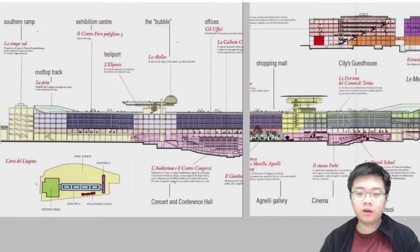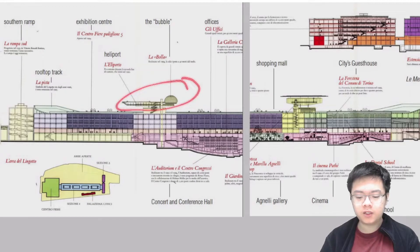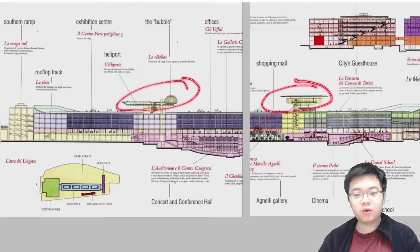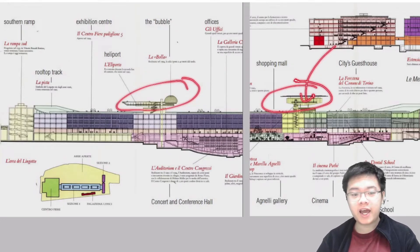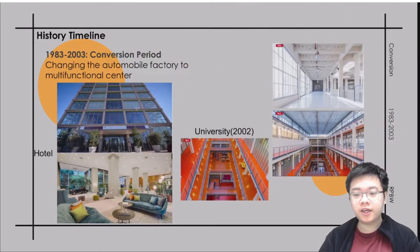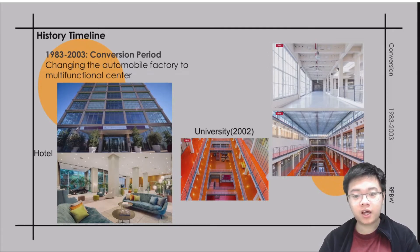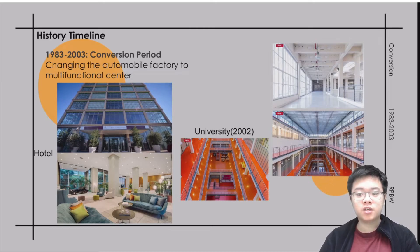You can see the two most famous symbols of this center on the roof: the bubble and the flying carpet. The flying carpet is an exhibition area serving as a private museum. The bubble is a conference room for people to have meetings and conduct business. Here are some interior photos showing the functions inside — you can see there is a hotel and a university, all combined together. The exterior of this factory has retained some of its original features.